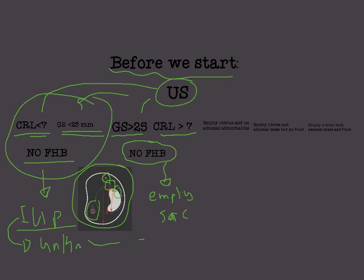If it were not empty, there would be some fetal heartbeat. So this is an empty sac — this is the second case. The third case: if we see an empty uterus with no adnexal abnormalities — no pregnancy in the uterus, tubes, ovaries, or surrounding tissues — this is pregnancy of unknown location.